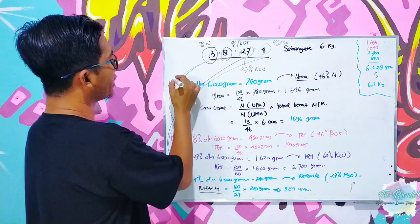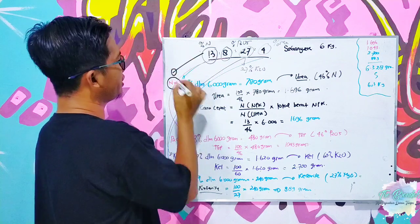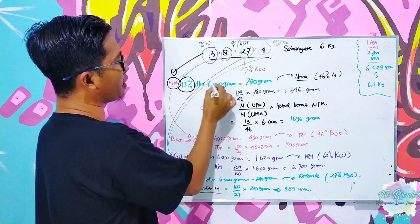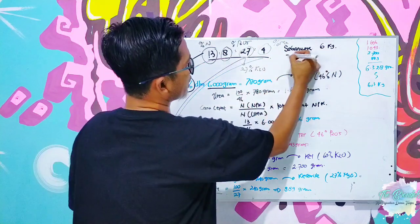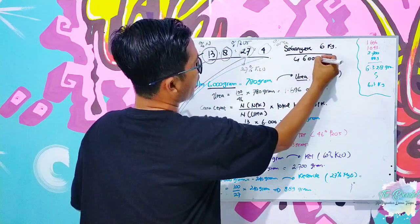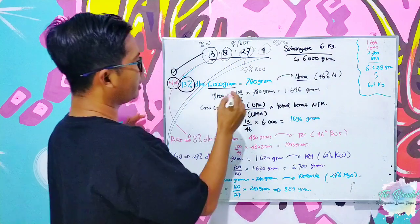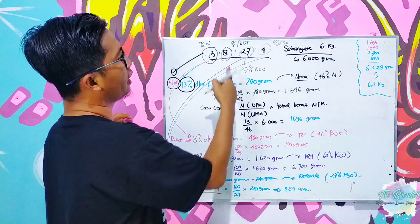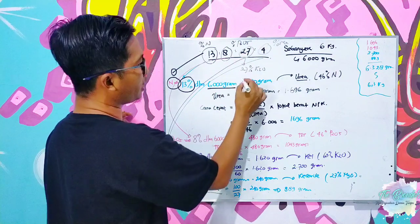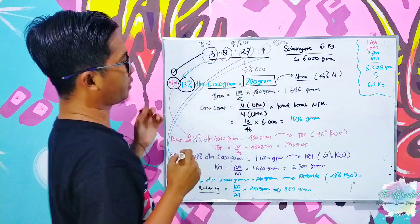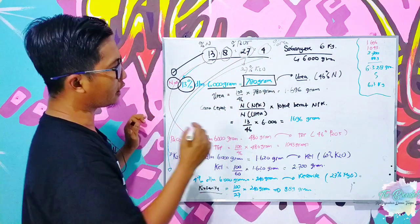Di dalam perubahan ini yang harus kita pahami, yang pertama adalah bahwa nitrogen yang pertama ini adalah 13 persen dalam 6 kg. 13 persen dari 6 kg atau setara dengan 6000 gram, maka di dalam perhitungannya dalam 6 kg NPK 13-8-27-4 ini mengandung 780 gram.